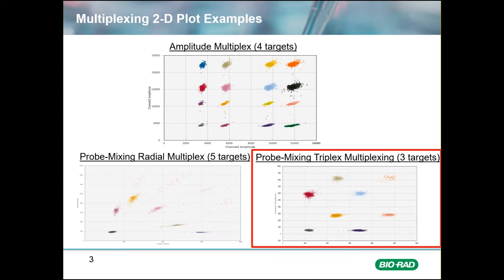Here are three examples of ddPCR multiplexing strategies and how the clusters might appear on the plot. At the top is an amplitude multiplex with four assays. On the bottom left, a probe mixing radial multiplex showing a 5-plex, and a probe mixing triplex with three assays shown on the bottom right. More clusters can be added using these strategies for further multiplexing. Today, I'm going to explore the probe mixing triplex multiplexing strategy — for the other two methods, see the additional videos.